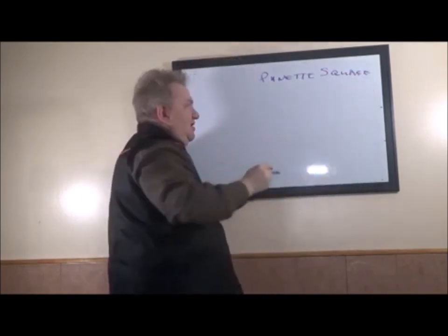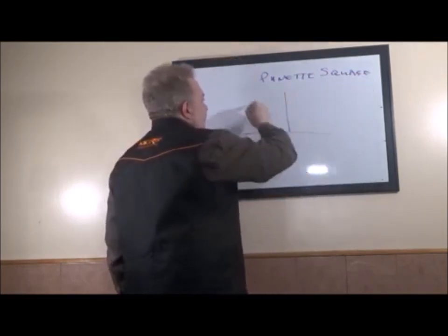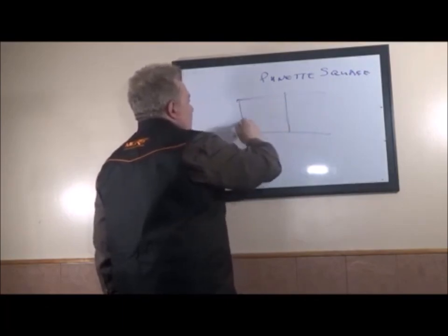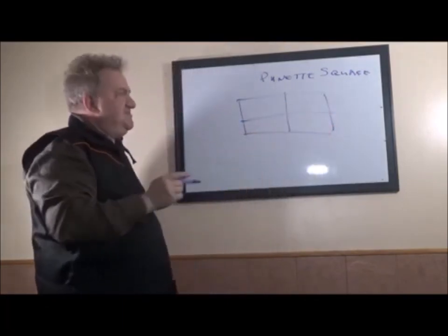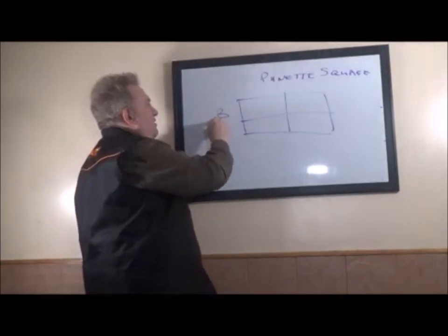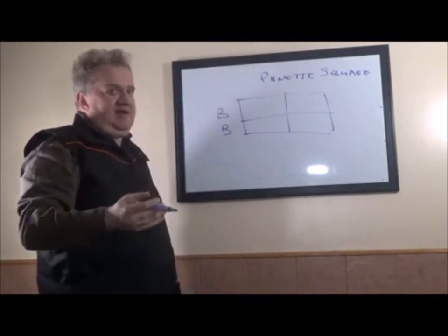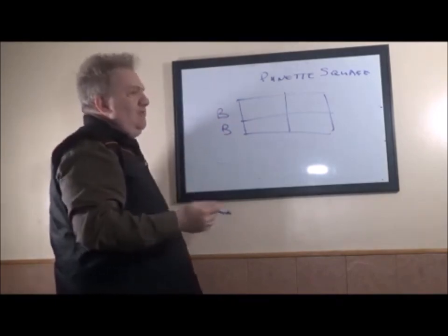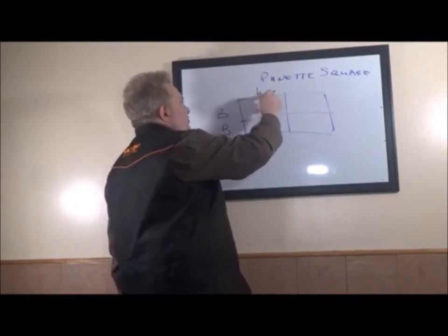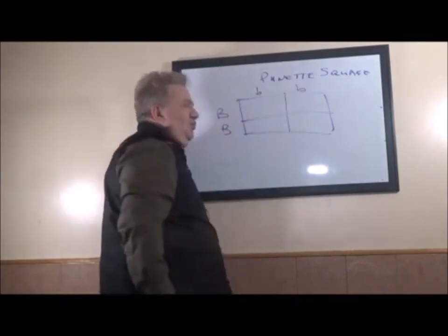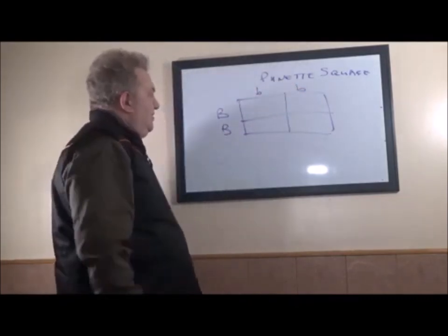Well, we are going to do something called a Punnett square, which kind of looks like a tic-tac-toe box. And we are going to write my wife as capital B and capital B - brown and brown. She is brown eyed. I am going to write myself as blue and blue. Blue eyes. I have blue eyes.